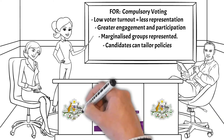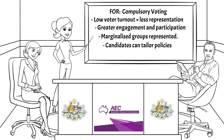Moreover, if a candidate knew only particular citizens would vote given the option to abstain, those candidates would tailor their policies to the smaller and narrower group of likely voters. And lastly, nations that have high or full voter participation tend to have lower corruption or potential for corruption.